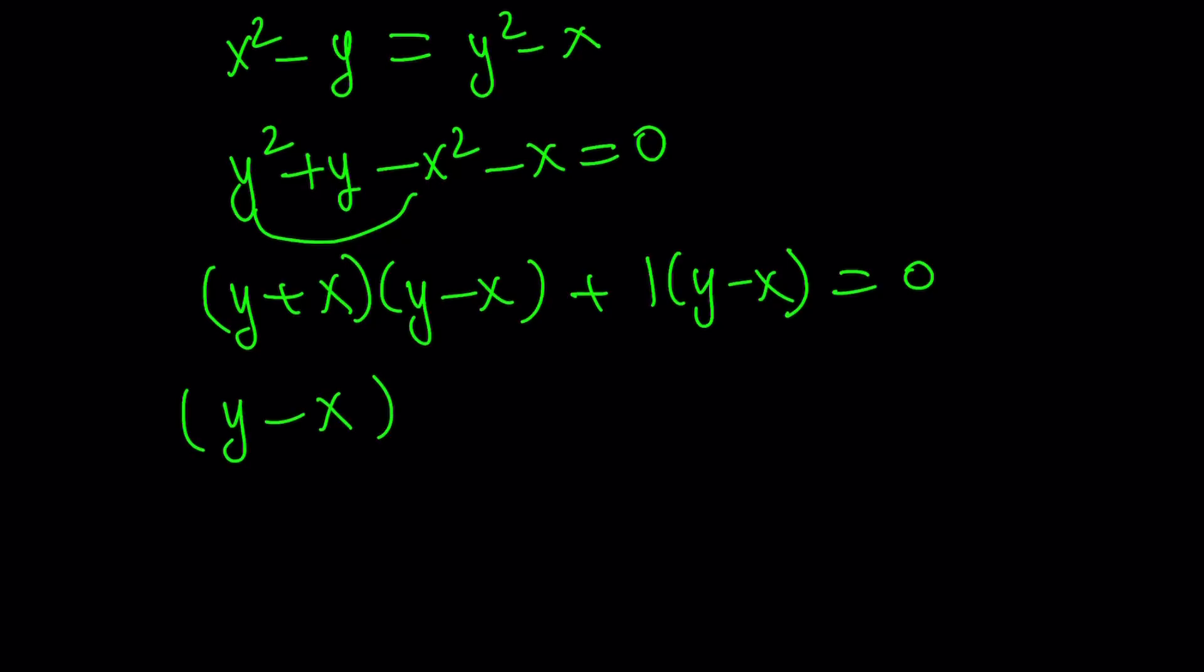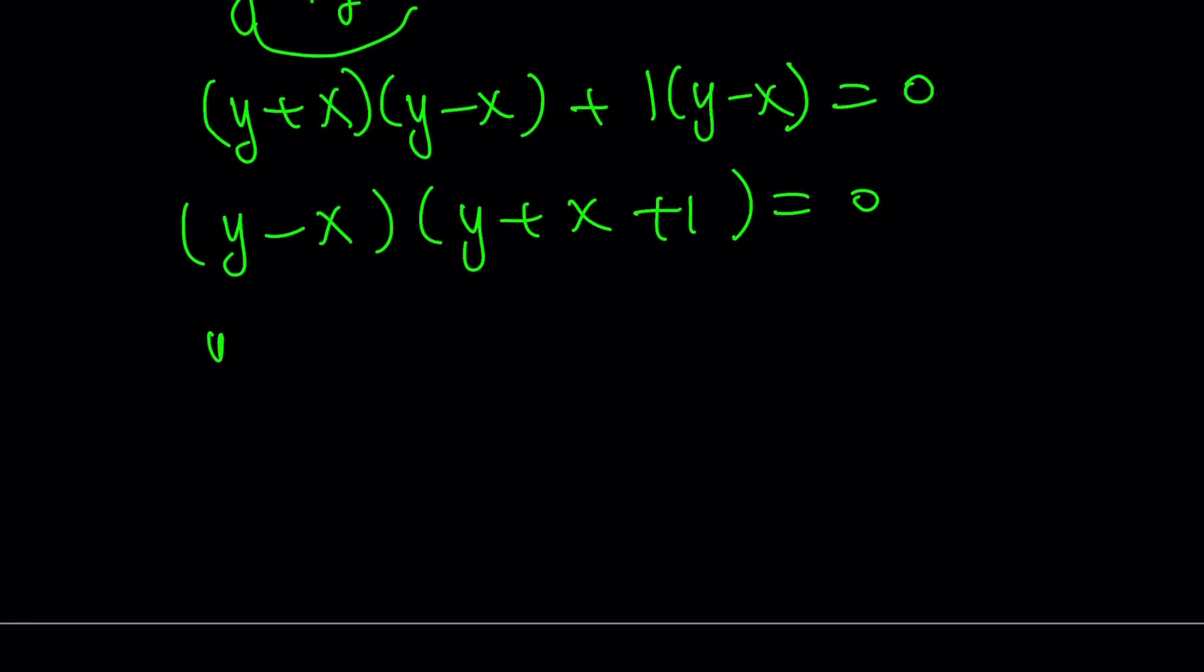Y minus x take out. Y plus x plus 1 equals 0. Awesome. From here we get two results. Y equals x or y plus x plus 1 equals 0. Let's go ahead and take a look at them separately.